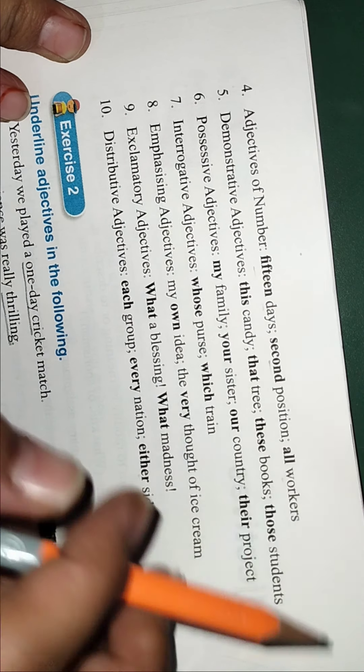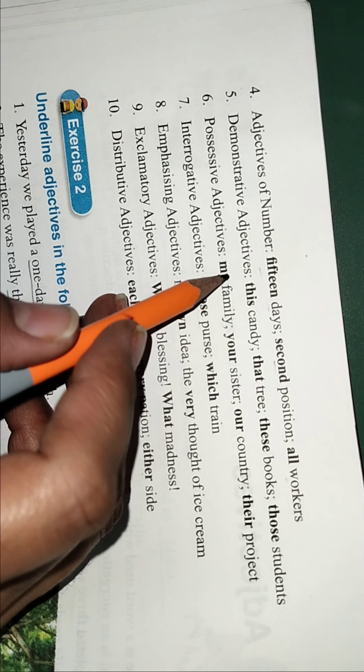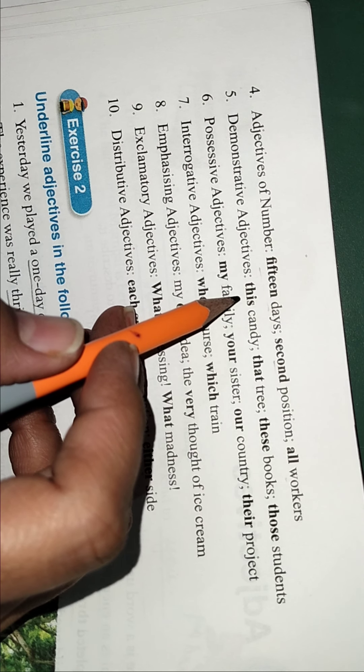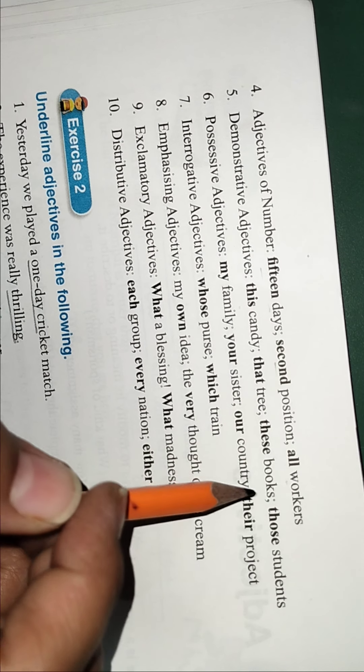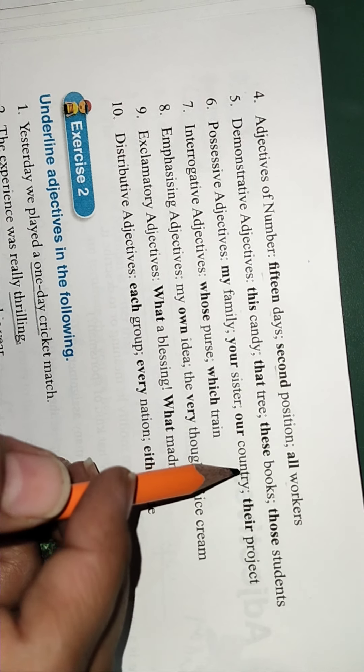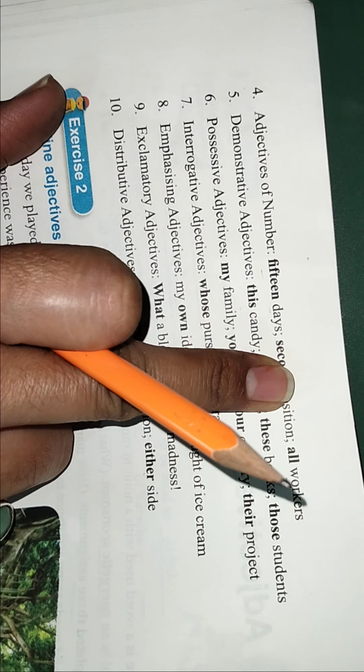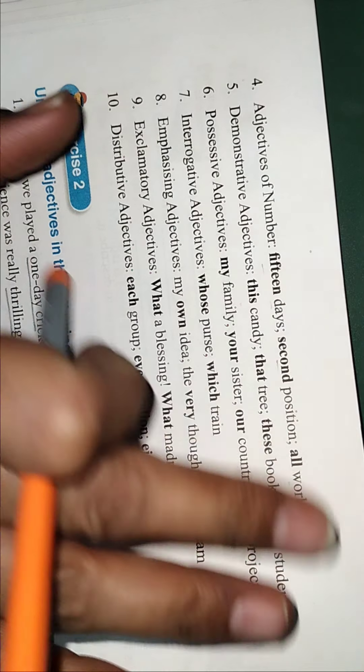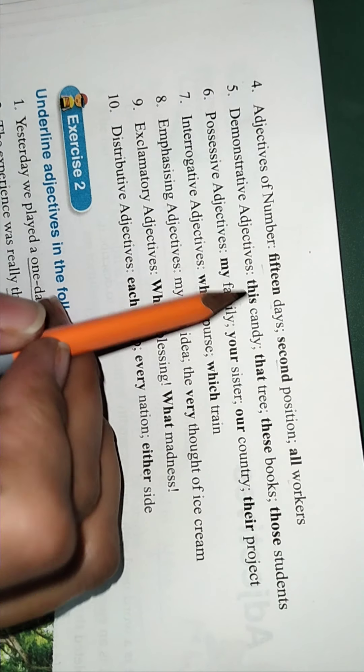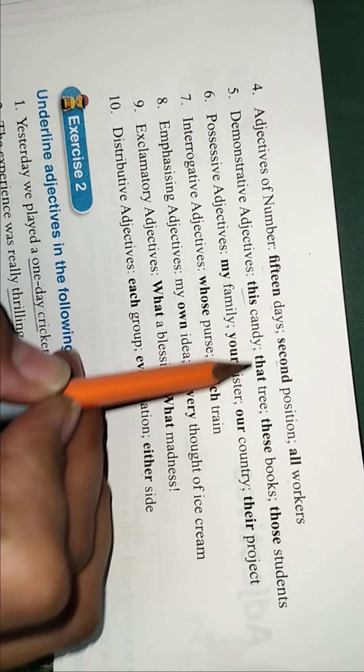In numerals, now comes the adjectives of numbers. So here it is going to tell you about the numbers - 15 days, second position, all workers. Demonstrative - they will demonstrate you, they will declare that.